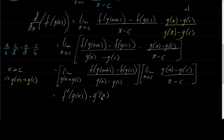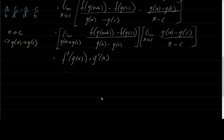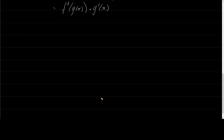This was using the alternative definition to prove it. Now let's do some examples. Let's say, for example, that I have f of x equal to 1 over x plus 1.